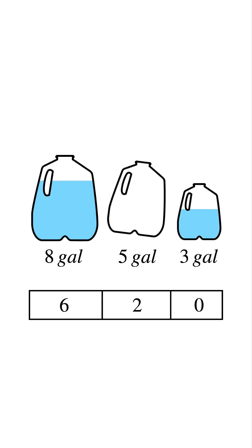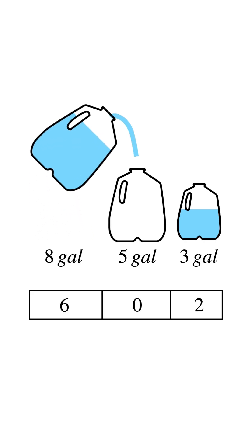Pour the remaining 2 gallons from the 5 into the 3. Now the 3 has 2 and the 5 is empty. Go back to the 8. Pour from the 8 into the 5 until the 5 is full. Now the 5 has 5 and the 8 has 1 left.